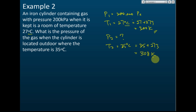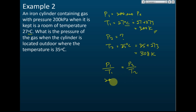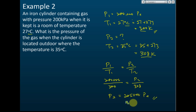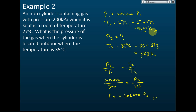Applying the pressure law: P1 over T1 equals P2 over T2. With P1 equals 200,000 Pa, T1 equals 300 K, and T2 equals 308 K, we solve for P2. The answer is P2 equals 205,000 Pascal, rounded to three significant figures. Always remember to convert temperature from degrees Celsius to Kelvin before applying the gas law formula.